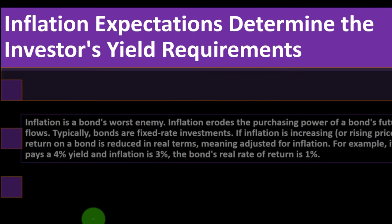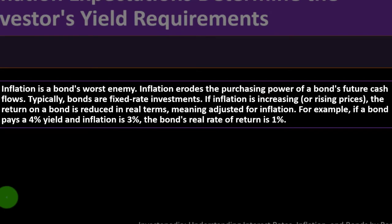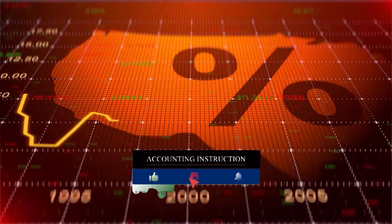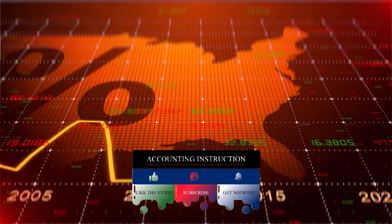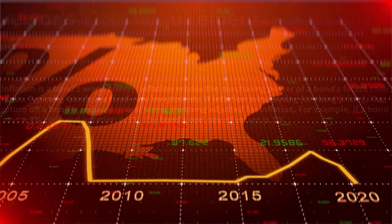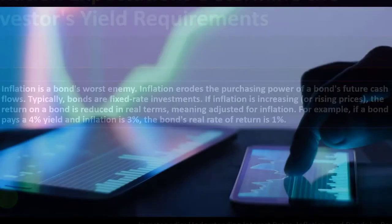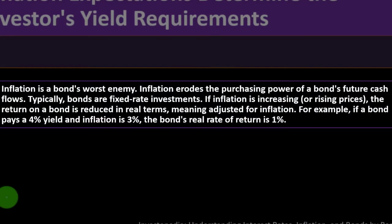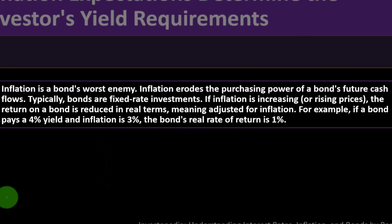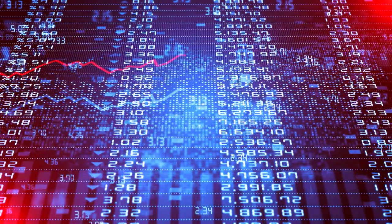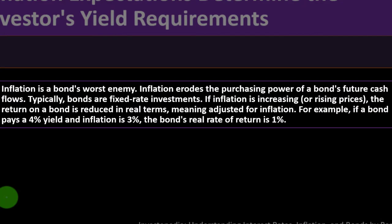Inflation is a bond's worst enemy. Inflation erodes the purchasing power of a bond's future cash flows. Since bonds are fixed-rate investments, if that fixed rate starts to look lower than the current market rate due to rising inflation, the investment doesn't play to your advantage. Conversely, if market rates go down it can be beneficial. Rising inflation means your real return is reduced.